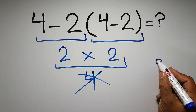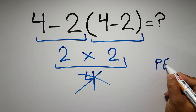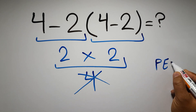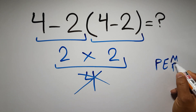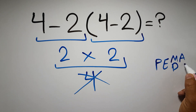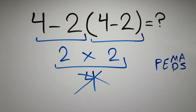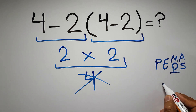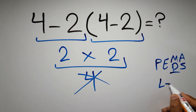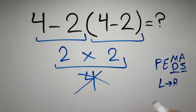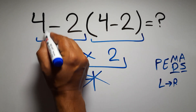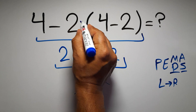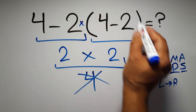first we have to do parentheses, then exponents, then multiplication or division, and finally addition or subtraction. Remember that multiplication and division have equal priority and we have to work from left to right, and the same applies to addition and subtraction. In this expression we have one subtraction, one multiplication, and one parentheses.